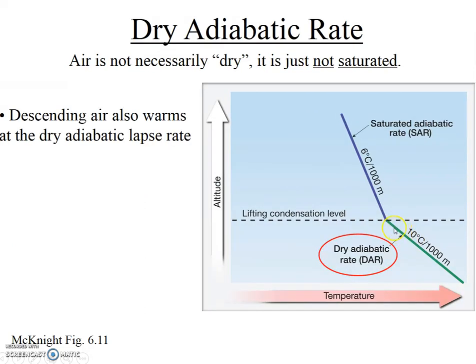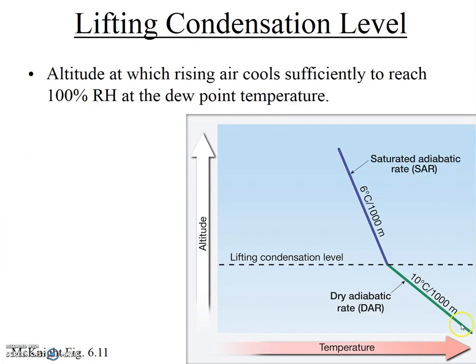So every 1,000 meters the air goes up in altitude, it loses 10 degrees Celsius of temperature. And notably, when the air comes back down again, it warms adiabatically at that same rate. You can see on this diagram that the dry adiabatic lapse rate — that cooling of air at 10 degrees Celsius for every 1,000 meters — doesn't continue indefinitely.